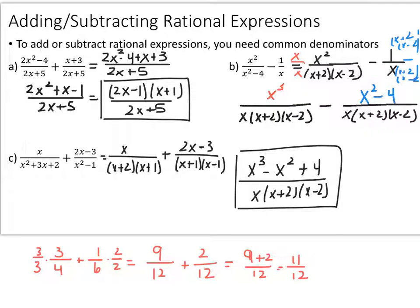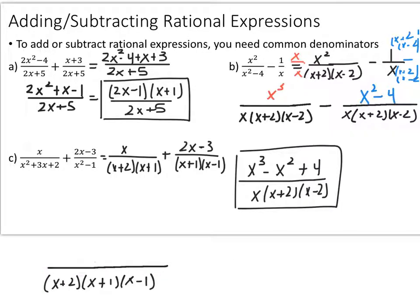We're going to use that same idea here since they share a factor. The denominator is not just the two multiplied by each other — it's the least common denominator, which is one of each factor: x plus 2, x plus 1, and x minus 1. So we only end up with one x plus 1 instead of two. Go ahead and pause the video and simplify this rational expression.